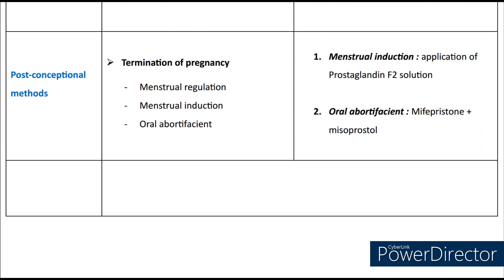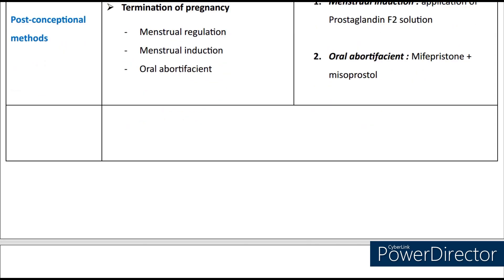Coming to post-conceptional methods, which are used to terminate the pregnancy, there are three types: menstrual regulation, menstrual induction and oral abortifacients. Menstrual induction is done through application of prostaglandin F2 solution, whereas oral abortifacients use Mifepristone and Misoprostol — one is given orally and the other through the vagina.